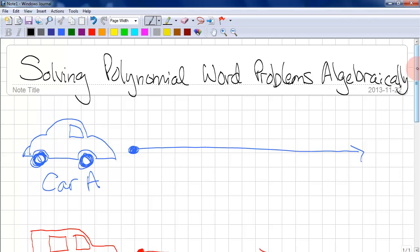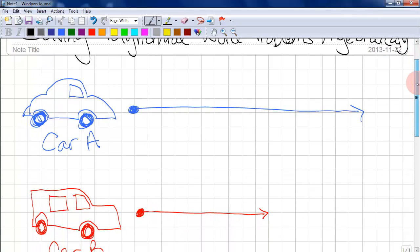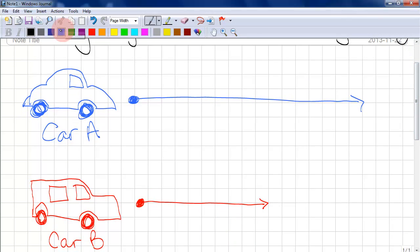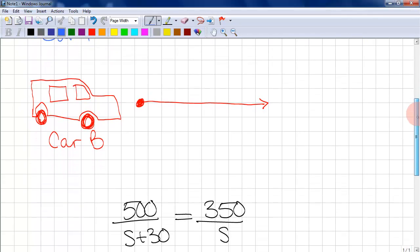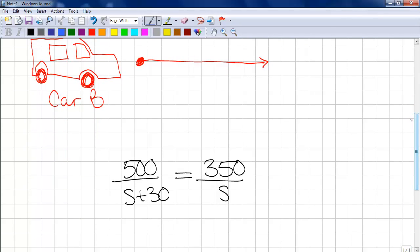There are two cars driving from Vancouver to Kelowna. Car A travels 500 kilometers in the same time that car B travels 350 kilometers. A rational equation that relates the average speeds of the two cars is shown here. S represents the average speed of car B in kilometers per hour.